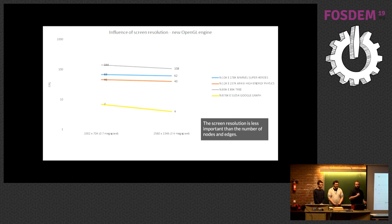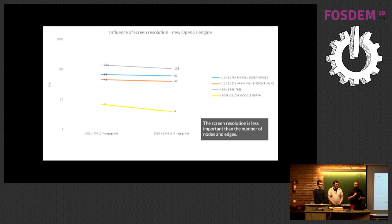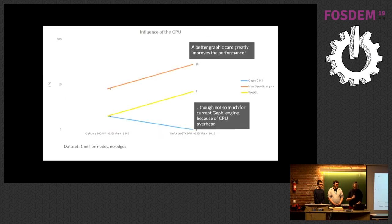Let's talk about screen resolution. On the left you have frames per second on a small screen, on the right on a huge screen. It's really quite flat — performance depends much more on the size of your network than the size of your screen. This is quite specific to OpenGL and WebGL — Canvas is not the same. So we could have much bigger screens, even on small chips, and it will still work. That's great news, including for WebGL.